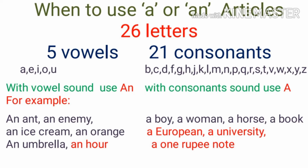An ant, an enemy, an ice cream, an orange, an umbrella. These examples begin with a vowel and also give the sound of a vowel, that is why we have used an. But here one example is an r — here h is a consonant but it gives the sound of a vowel, 'aar', so that is why we have used an.